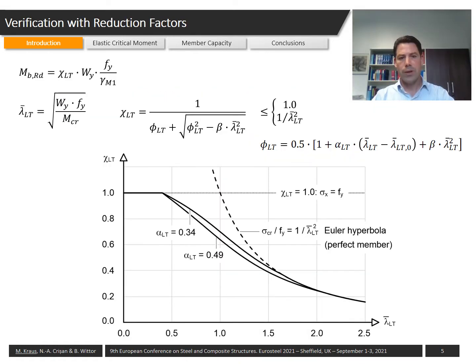For the verification of sufficient member capacity, different approaches exist. One of these approaches is the use of reduction factors. This approach is also included in Eurocode 3, and the cross-sectional capacity is reduced using the factor χLT to the member capacity MbRd, the moment capacity of the member incorporating the effects of lateral torsional buckling. The reduction factor χLT is mainly influenced by different imperfections of the member which have decisive impact on the structural behavior.